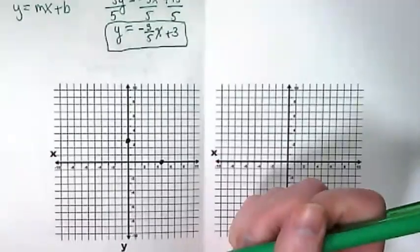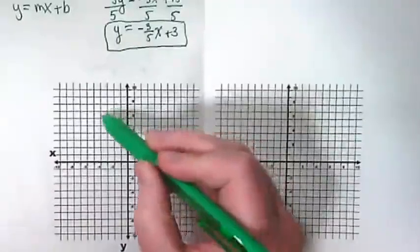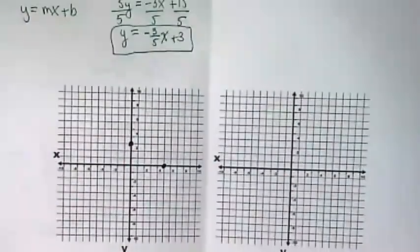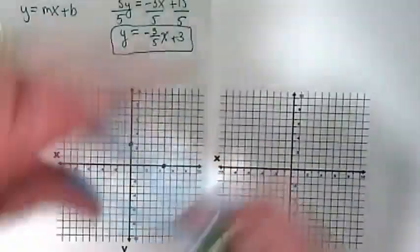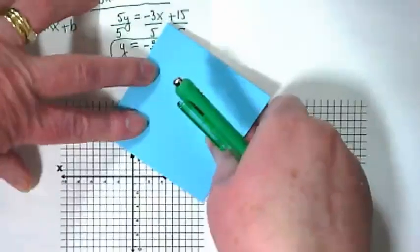Does that look like it's going to get me a negative line? And that's what I need. So all I have to do is get 2 points on there and I can draw my line.